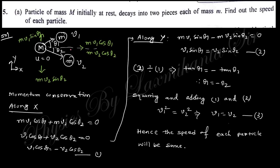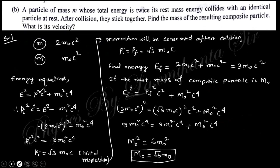The next question: a particle of mass M initially at rest decays into two pieces each of mass m. Find the speed of each particle. Mass M has initial speed zero; the two pieces m move with speeds v1 and v2 at angles theta_1 and theta_2. By momentum conservation along x: m*v1*cos(theta_1) = m*v2*cos(theta_2), and along y: m*v1*sin(theta_1) = m*v2*sin(theta_2). Dividing gives theta_1 = -theta_2, so the angles are equal in magnitude, and adding gives v1 = v2.